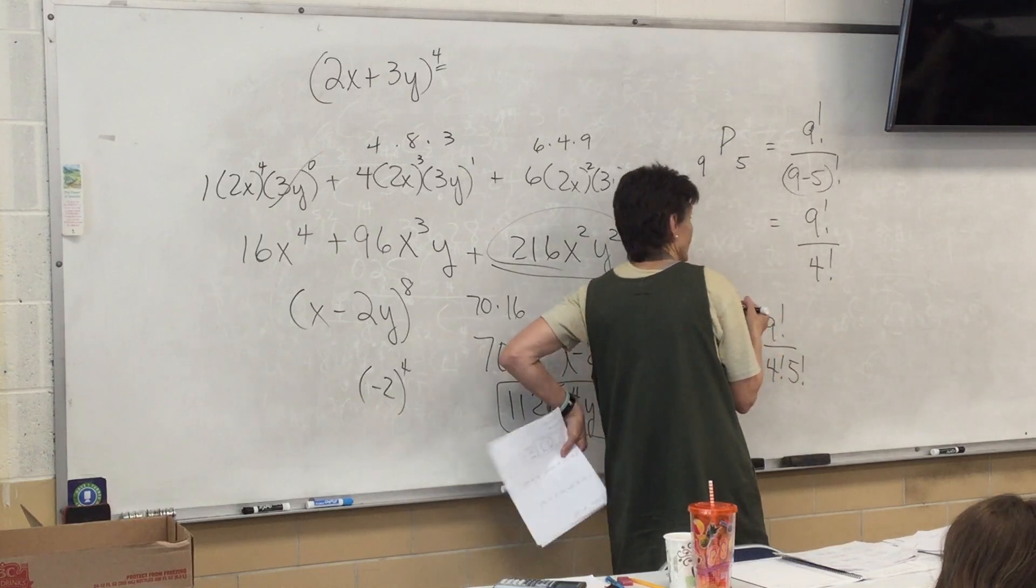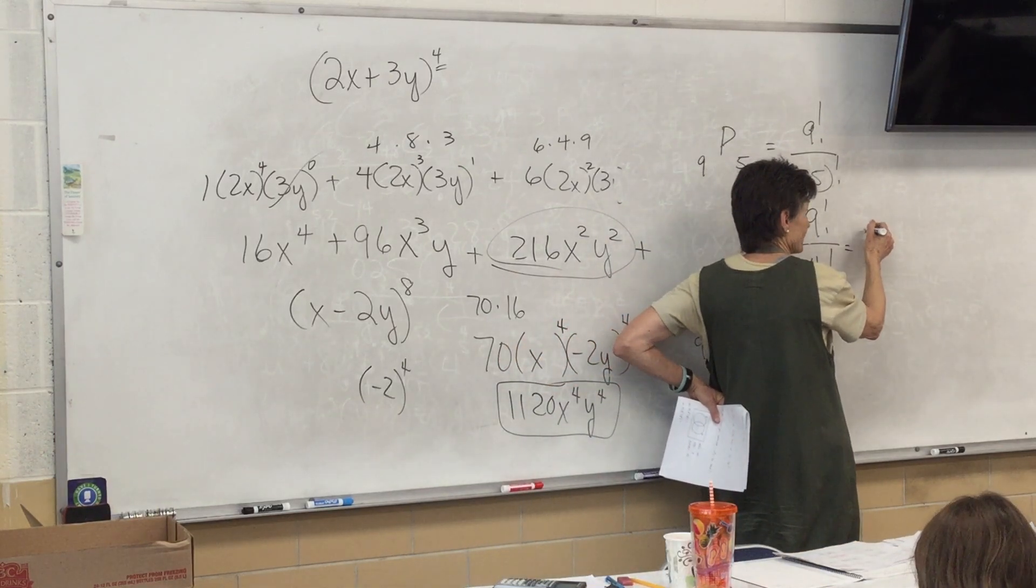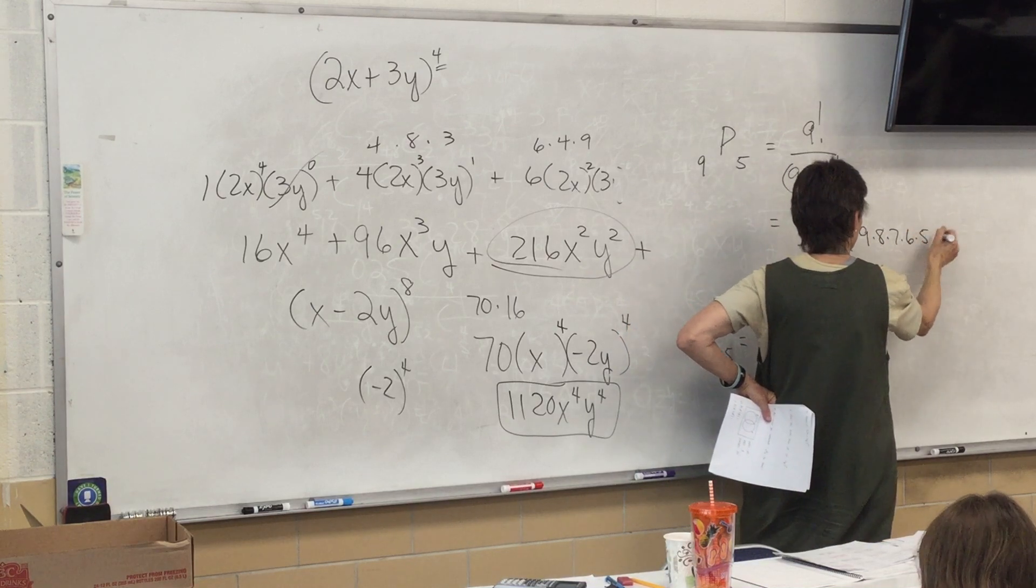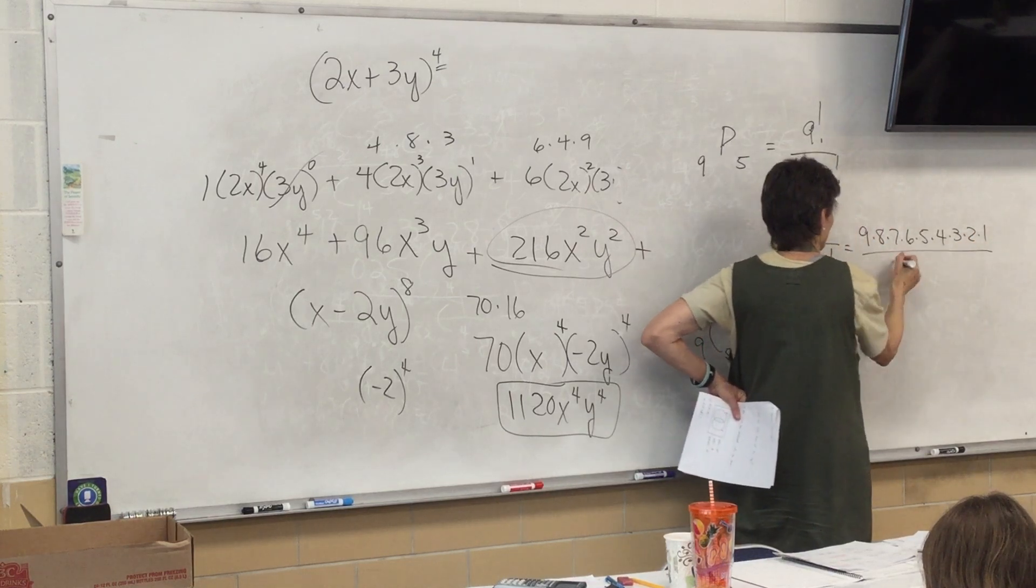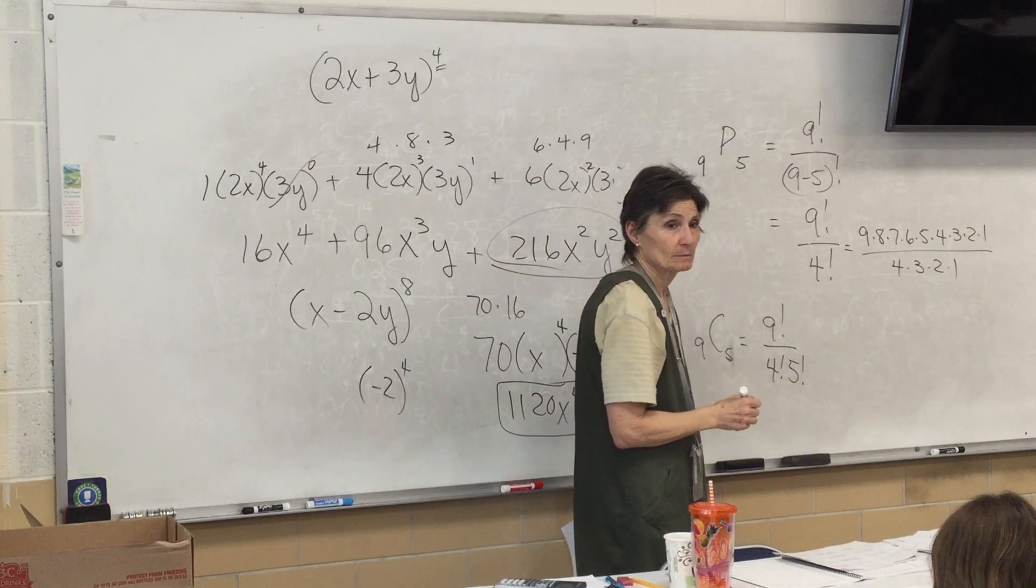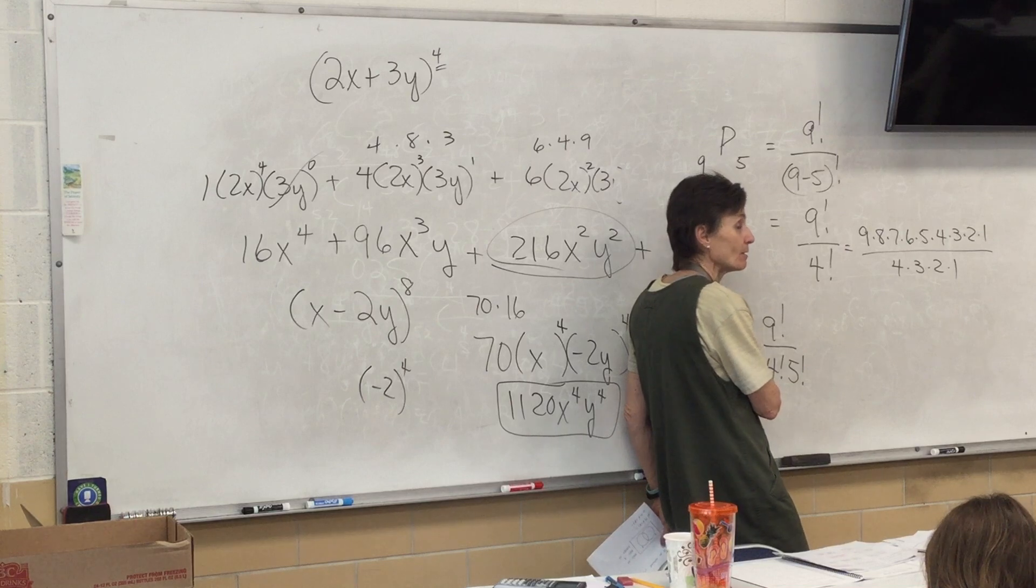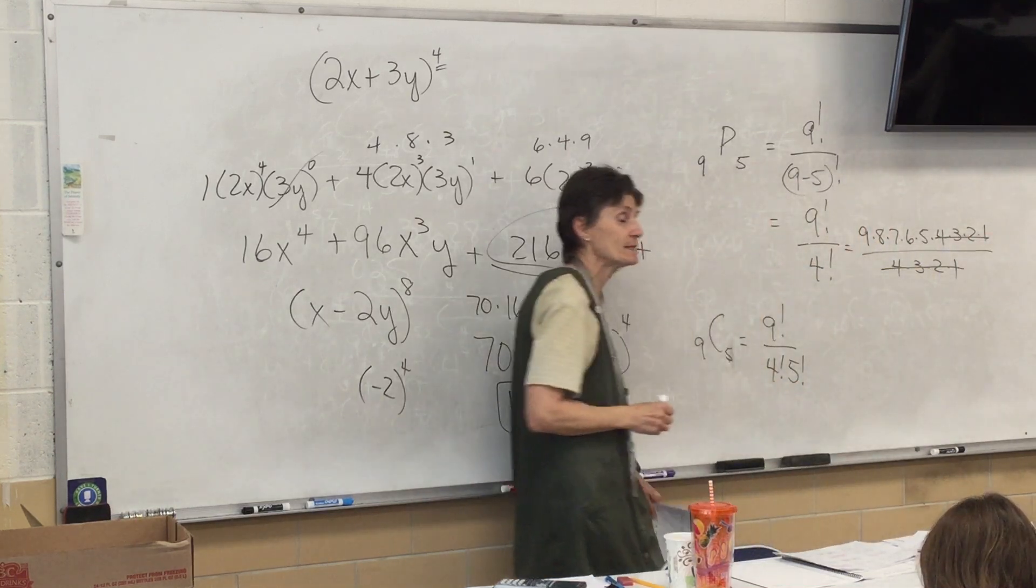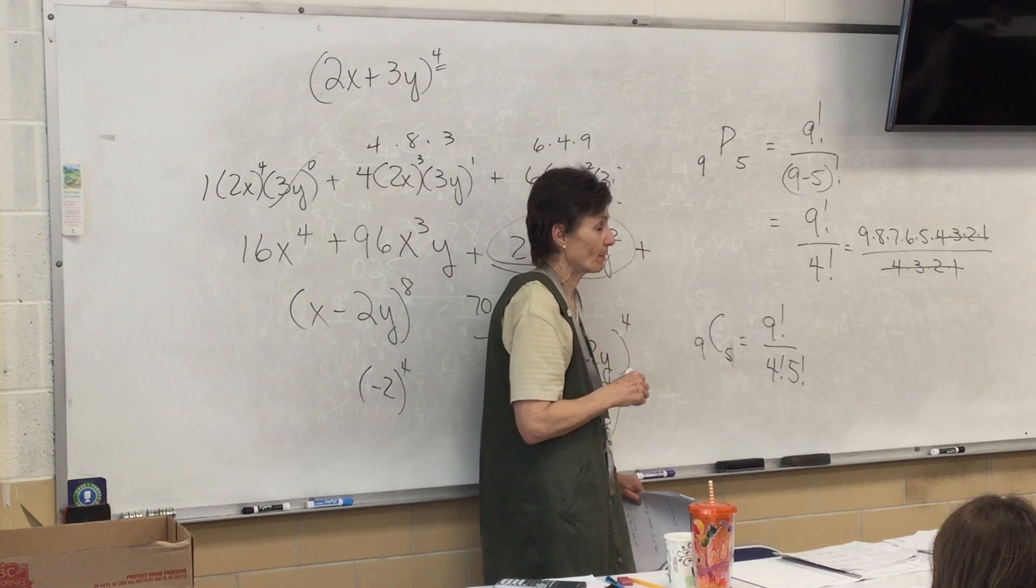So, how are you going to calculate this? 9, 8, 7, 6, 5, 4, 3, 2, 1. Over 4, 3, 2, 1. And, always, whether it's a P or a C, it doesn't matter. You're always going to cancel out your denominator. It's always going to totally disappear. You're never going to have a fractional answer. It's going to be a whole number.